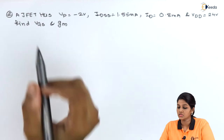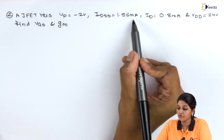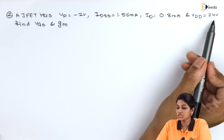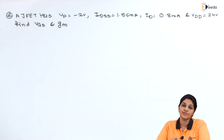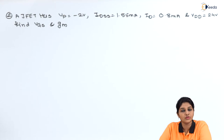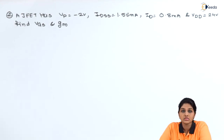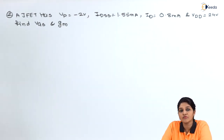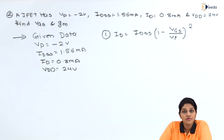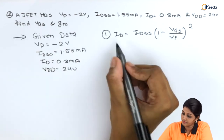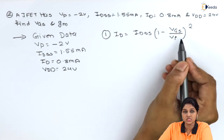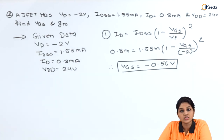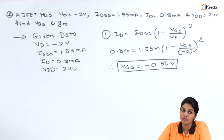The statement of the second problem is: A JFET has VP = −2 V, IDSS = 1.55 mA, ID = 0.8 mA, VDD = 24 V. Find VGS and GM. To find VGS, we use the formula: ID = IDSS × (1 − VGS/VP)². Here VP is given instead of VGS(off), so we use VP in place of VGS(off). Substituting the known values, the value of VGS is obtained as 0.56 V.